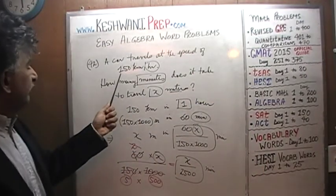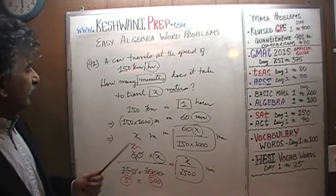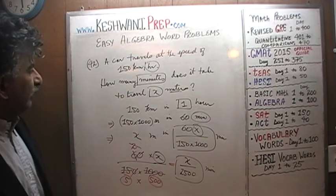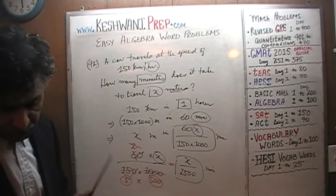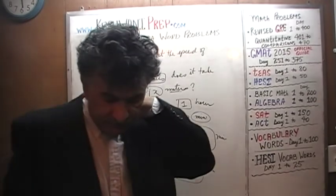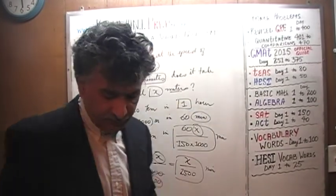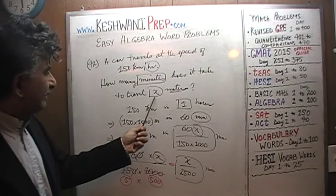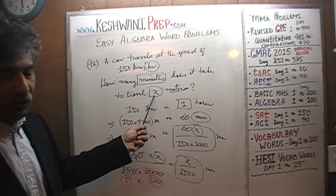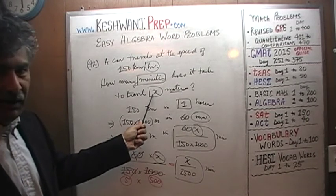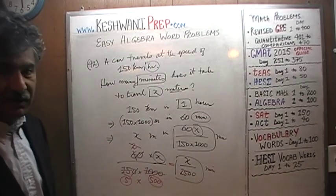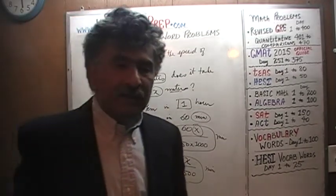Let's plug in something nice for X. We know we're going 150 kilometers per hour — we need to plug in something for X, how far do you want to go? We cannot plug in 2, 3, 5 or 10, because these are meters and the speed is in kilometers. We need to plug in something nice and big — that comes through practice.